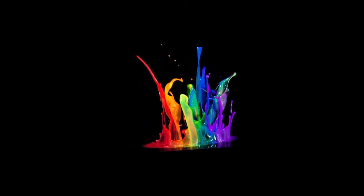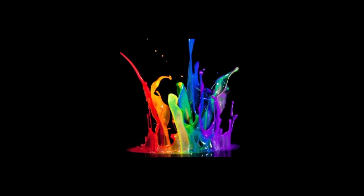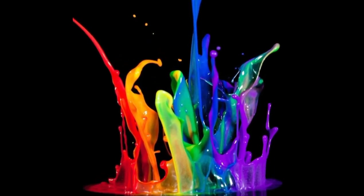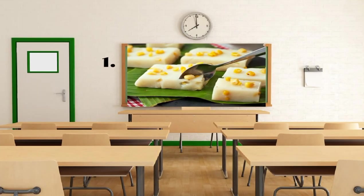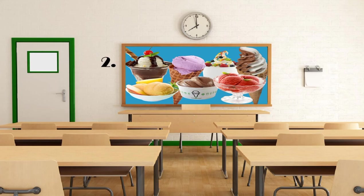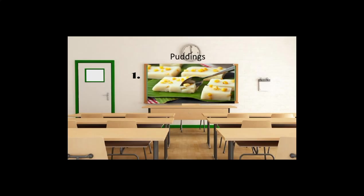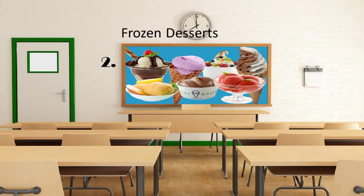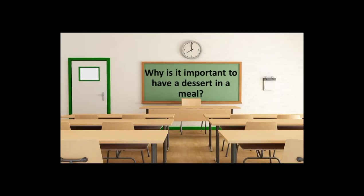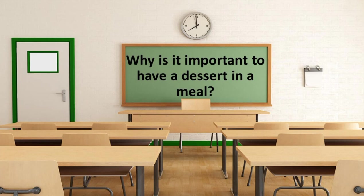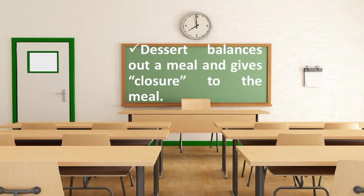Now, get a piece of paper and write down your answer. After this, you will take a picture of your answer and send it to my messenger account, and that will be your attendance for today's session. Now, let's identify what type of dessert based from the picture shown. Number one is pudding. Number two, frozen desserts. Number three, gelatin. Who got perfect? Please send to my messenger account.